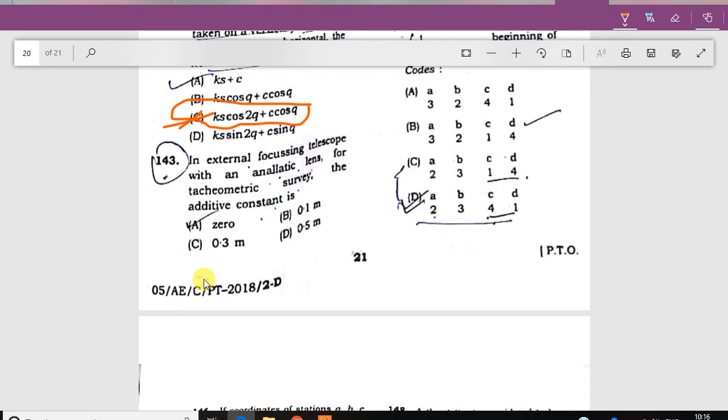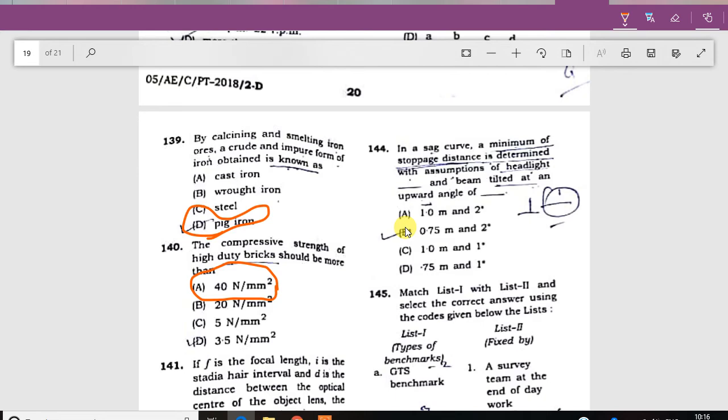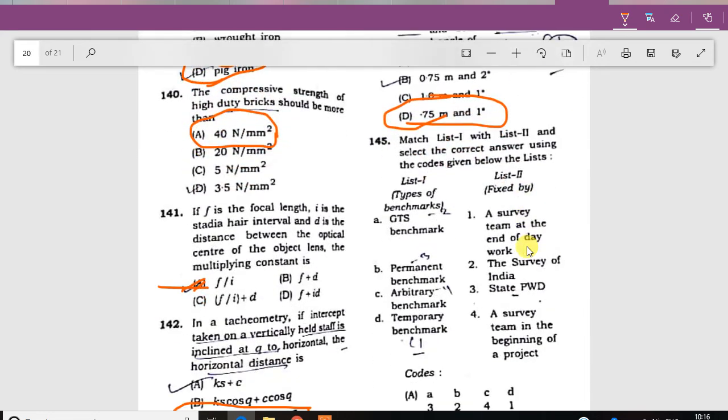The external focusing telescope with an analytic lens for trigonometric survey, the additive constant is zero. The sight distance that determines the assumption is the headlights dash is the beam tilted at an upward angle of 0.75 meter and 1 degree.